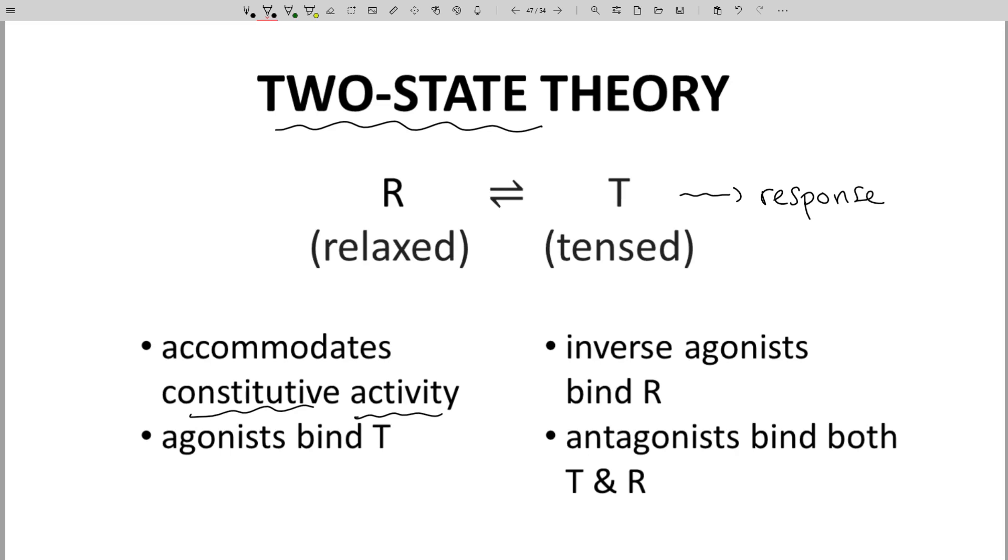How does two-state theory include ligands? Agonists bind more strongly to the tensed state, and the equilibrium shifts to the right to give more response. Antagonists bind both states in an equal manner – in a manner that does not change the equilibrium or response.